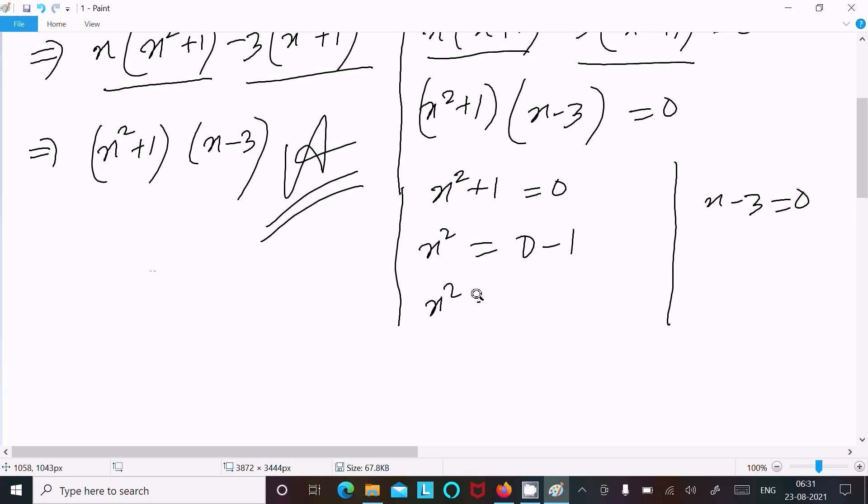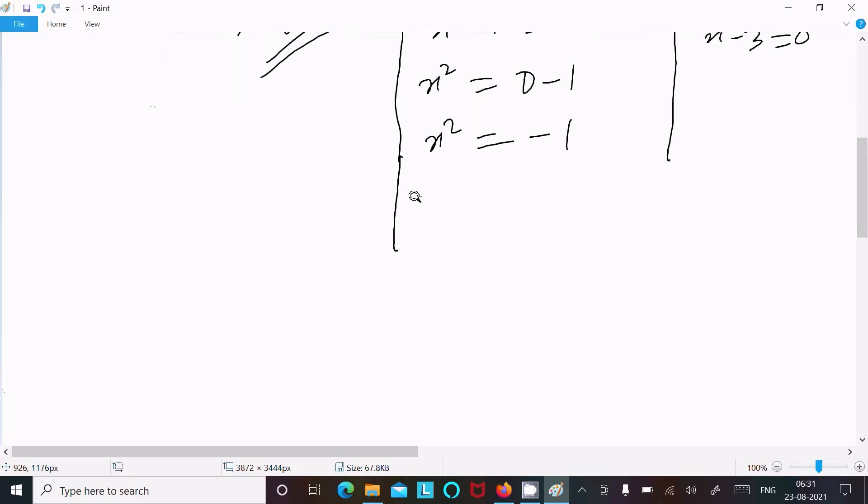Or write here x² = -1. So now removing the square, so here x = √(-1) and here plus minus. If you calculate this return imaginary value.